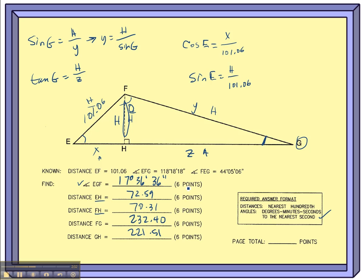Now, it makes sense to just take a second or two to look at your numbers and see if they make sense in the picture. Does it make sense that, for example, GH, 221.51, is smaller than Y, which is the hypotenuse of the right triangle, 232? And yeah, it does.